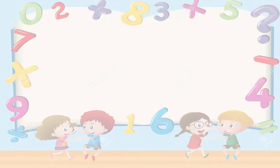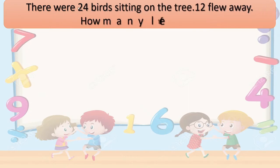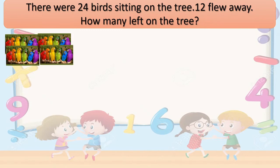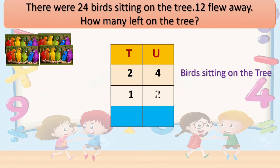Got this, children? Next one. There were 24 birds sitting on a tree. 12 flew away. How many are left on the tree? Here you can see 24 birds sitting on the tree. We will make a table and write 24 — birds sitting on the tree. 12 birds flew away, so we put a minus sign. We have to take out 12 birds from 24.